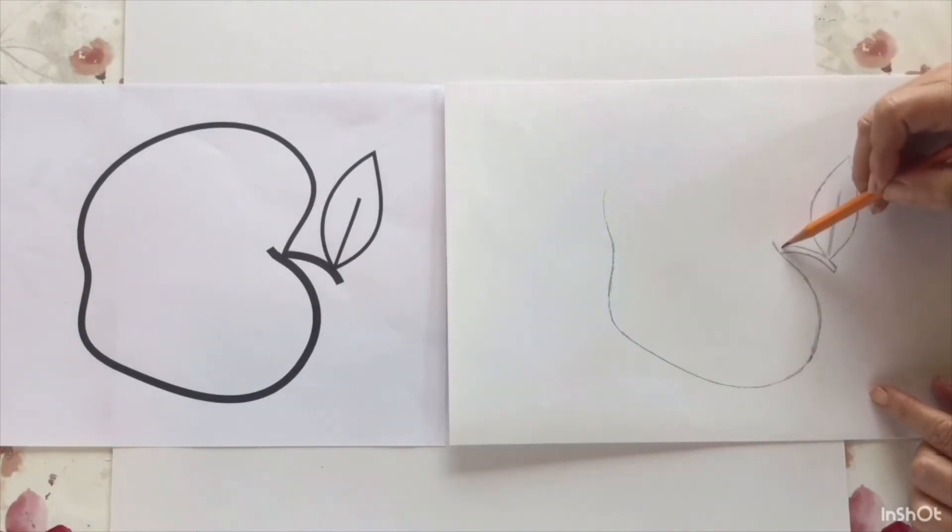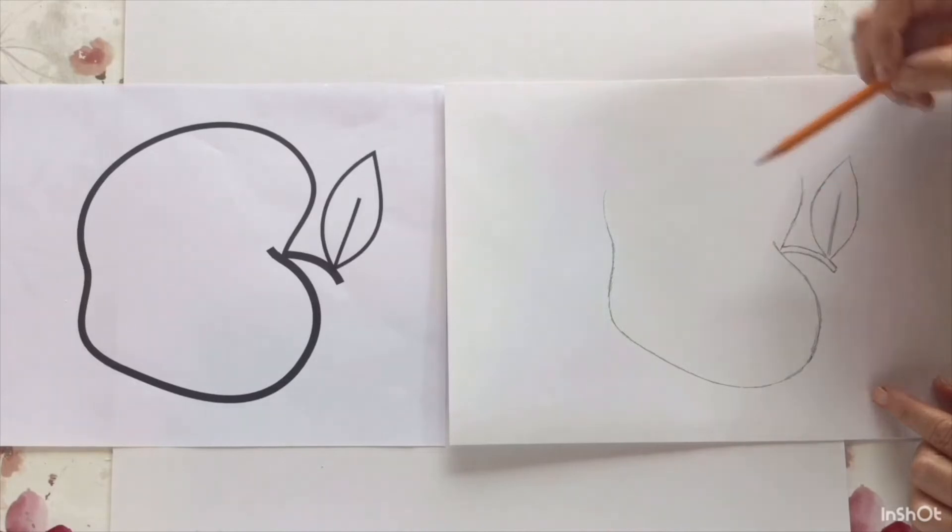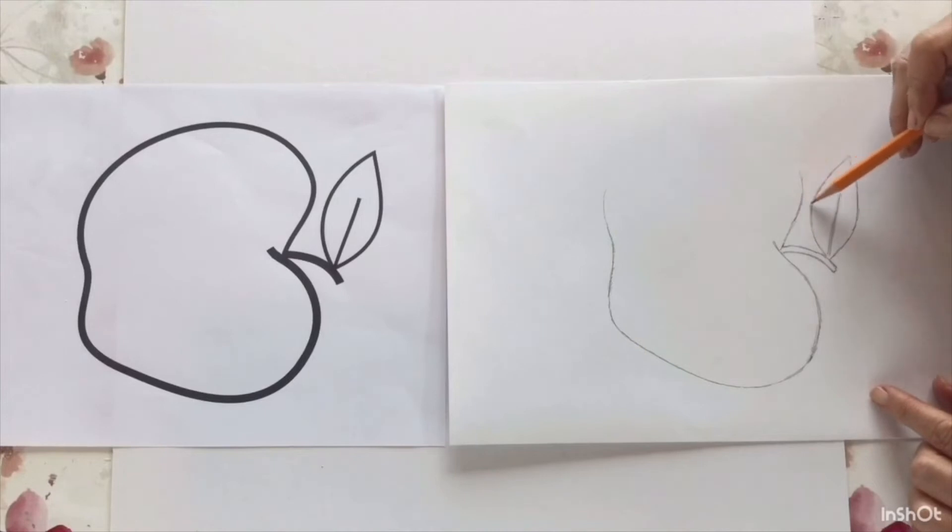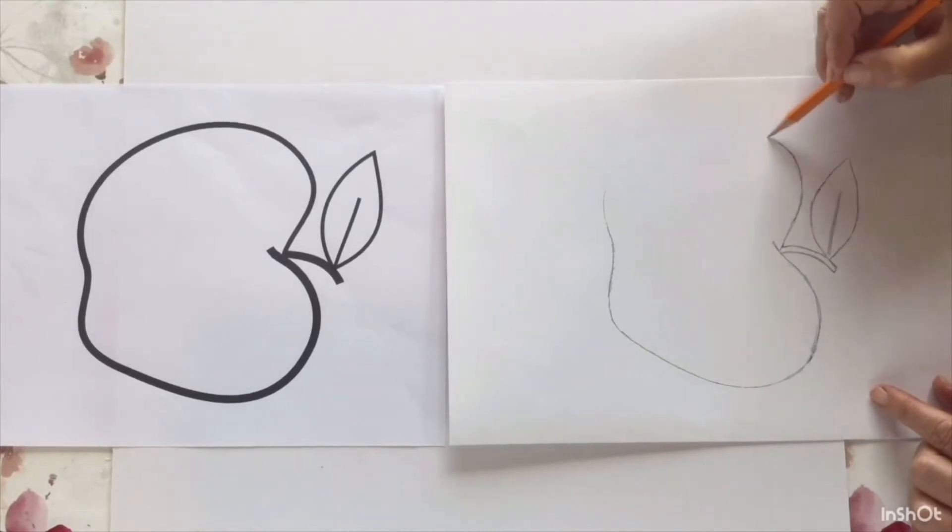Another thing that can help you get your angles right is to focus on the negative space. This is the space around and between an object. See how I'm looking here between the apple and the leaf? I'm trying to match that. If I can get that shape right, then I know for sure my drawing is on the right track.